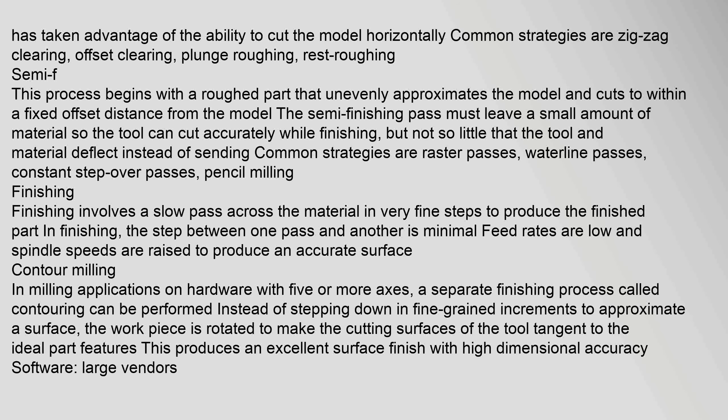Finishing involves a slow pass across the material in very fine steps to produce the finished part. In finishing, the step between one pass and another is minimal; feed rates are low and spindle speeds are raised to produce an accurate surface contour. In milling applications on hardware with five or more axes, a separate finishing process called contouring can be performed. The workpiece is rotated to make the cutting surfaces of the tool tangent to the ideal part features, producing an excellent surface finish with high dimensional accuracy.